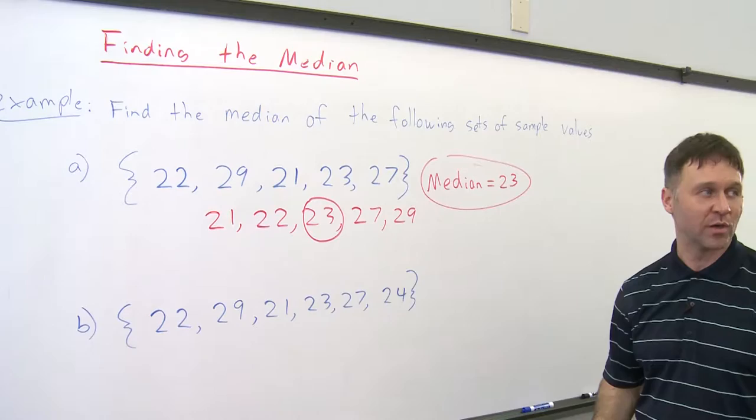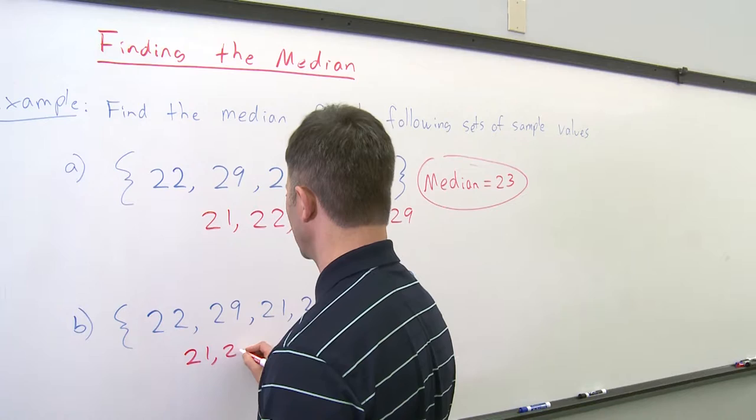Now let's look at the second set. Again, we have this list of values and we need to list them in order of increasing magnitude.